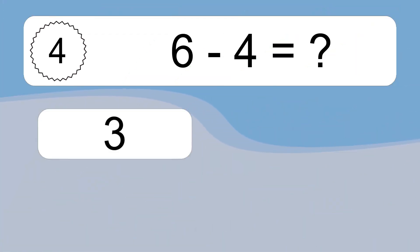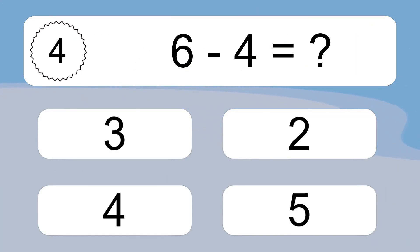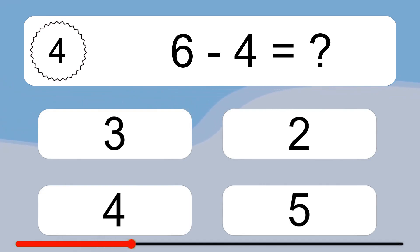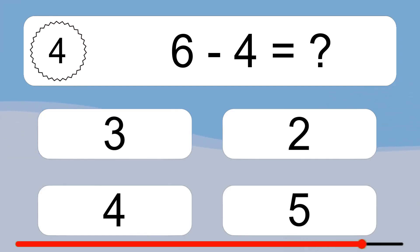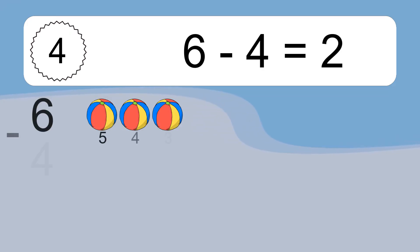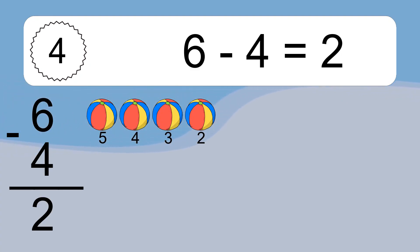6 minus 4 equals what? 6 minus 4 equals 2. Let's count it. 5, 4, 3, 2.